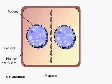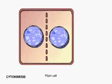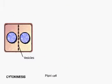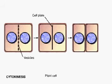In plant cells, cytokinesis begins when vesicles containing cell wall material collect in the middle of the cell. The vesicles fuse, forming a large sac called the cell plate. The cell plate grows outward until its membrane fuses with the plasma membrane, separating the two daughter cells. The cell plate's contents join the parental cell wall, resulting in two daughter cells each bounded by its own continuous plasma membrane and cell wall.